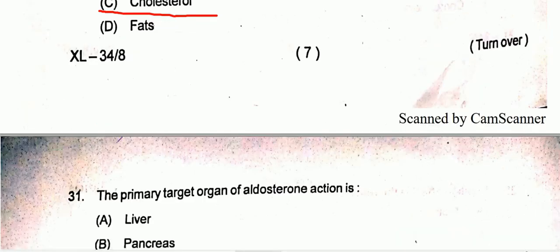Question thirty-one: the primary target organ of aldosterone action will be the kidney. The kidney is the primary target organ of aldosterone action, so option C will be the correct one.